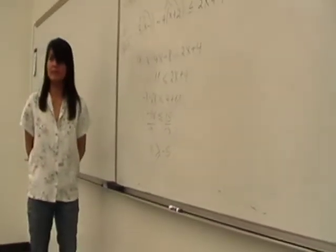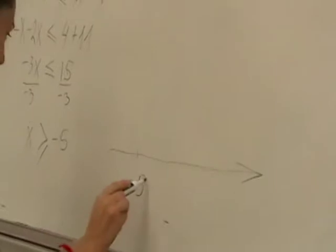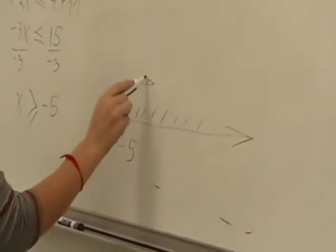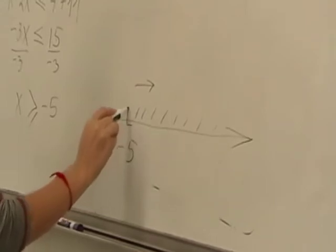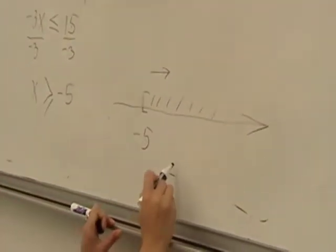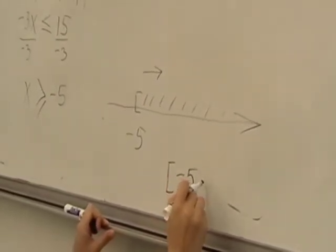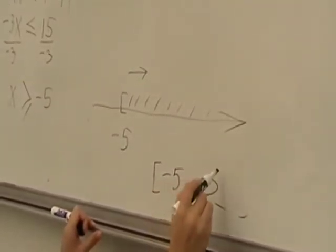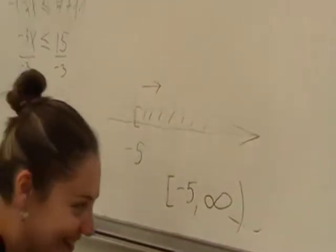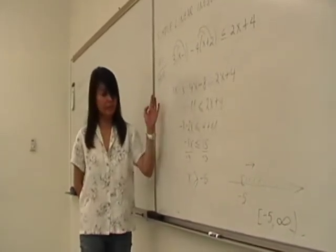Now you can graph it. Here is minus 5, greater than or equal, so you go to the right. We include minus 5 because we have the equal sign, so use a bracket. The interval notation is bracket negative 5, comma, infinity. And on your test, I only require the graph and the interval notation.